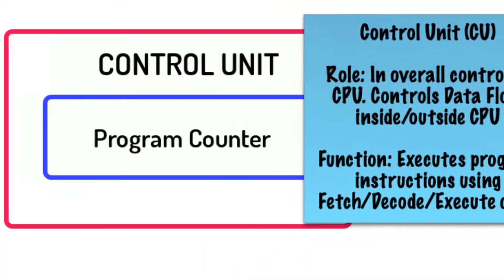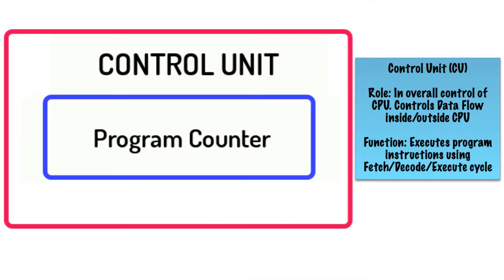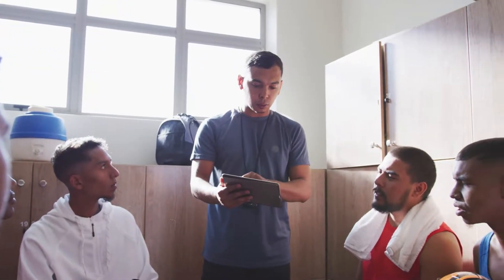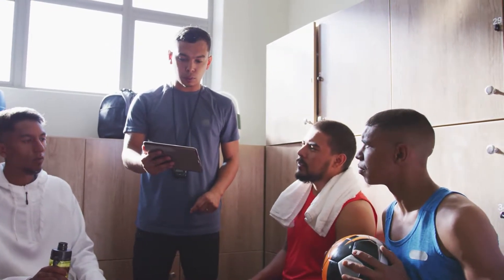The control unit is in overall control of the CPU. It controls the flow of data both inside and outside the CPU — it's the organizational force. It controls the signals required to coordinate the running of the processor, including the movement of data between components. Its overall function is to execute program instructions using the fetch-decode-execute cycle. It's like the manager of a football team — it directs operations and moves parts around, reading data or instructions for the players as and when required.